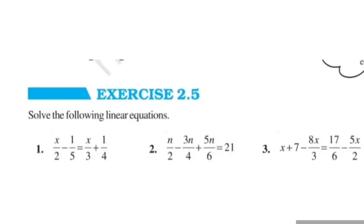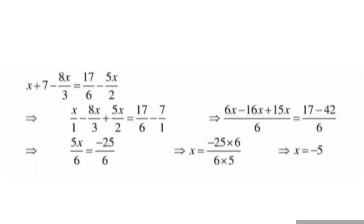Let's see question number 3: x plus 7 minus 8x upon 3 is equal to 17 upon 6 minus 5x upon 2. Let's write all variables on one side. It will come: x minus 8x upon 3 plus 5x upon 2 on the left, and right hand side 17 upon 6, and this 7 changes sign.